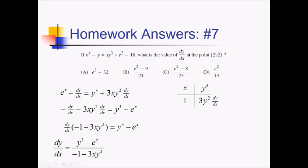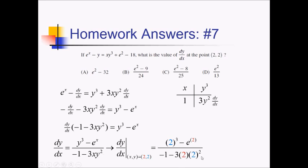Now I plug in (2, 2). The numerator is 2 cubed minus e to the 2, which is 8 minus e squared. The denominator is negative 1 minus 3 times 2 times 2 squared, which is negative 1 minus 24, so negative 25. This gives 8 minus e squared over negative 25. Since we can multiply numerator and denominator by negative 1, this becomes e squared minus 8 over positive 25, which matches answer choice C.